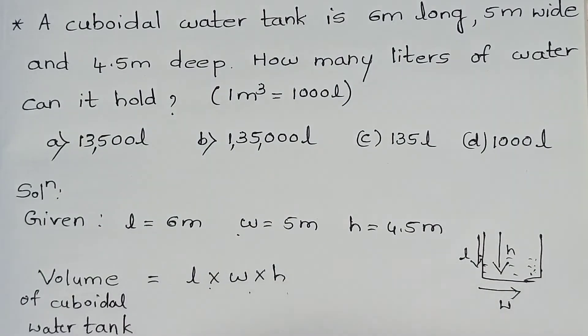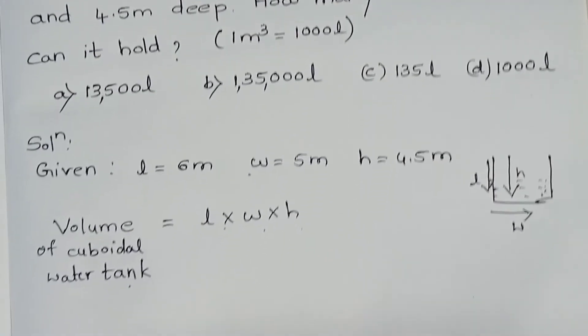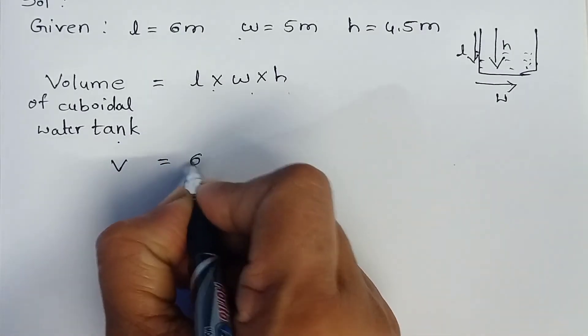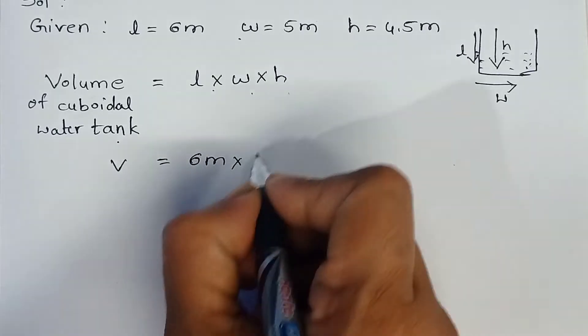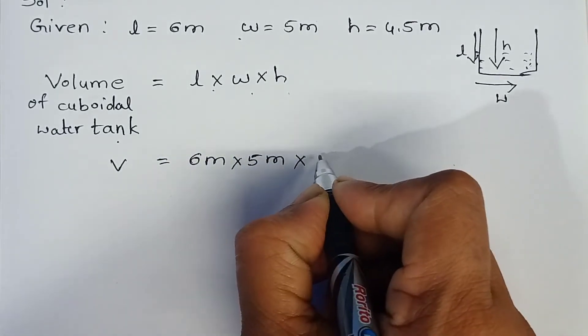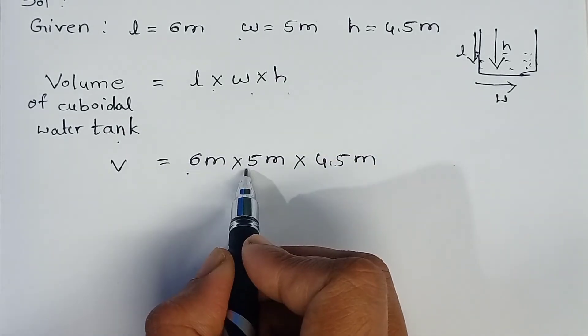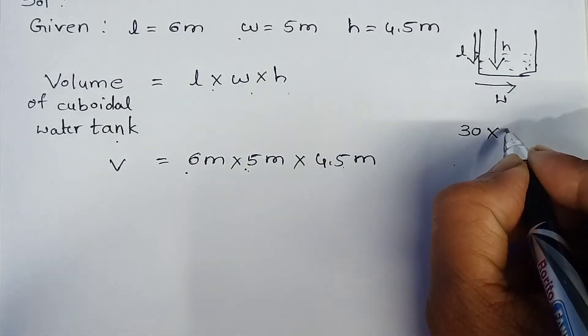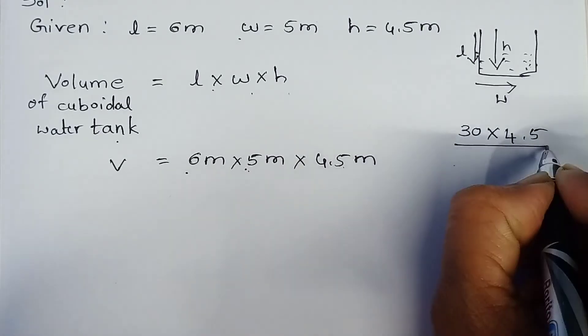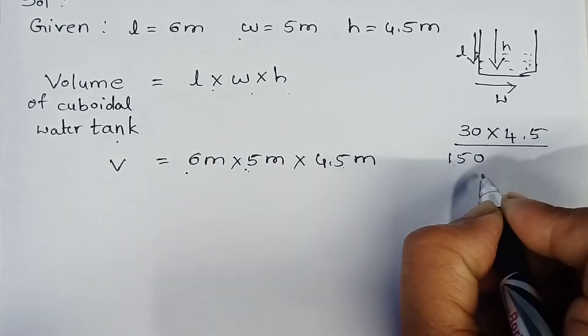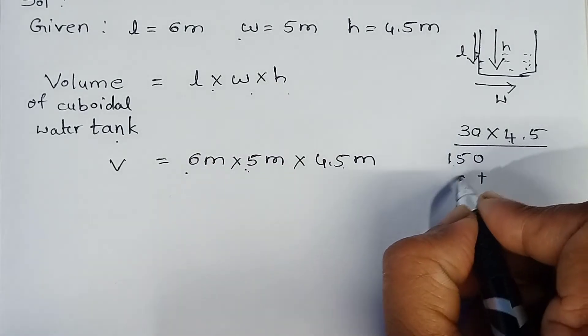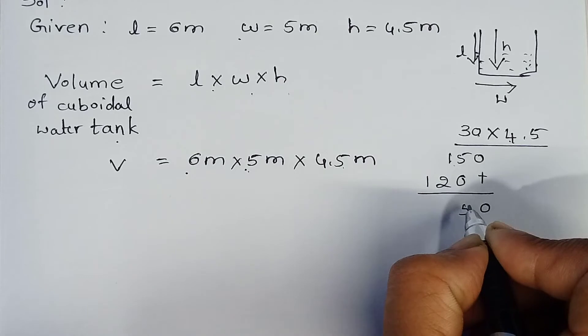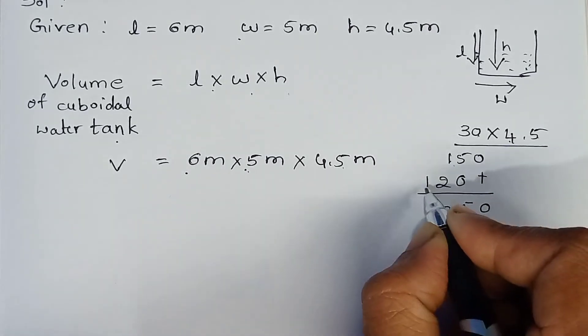Volume of cuboidal water tank is equal to length into width into height. Now, let's substitute the values of length, width and height. Volume is equal to length is 6 meter into width is 5 meter and height is 4.5 meter.